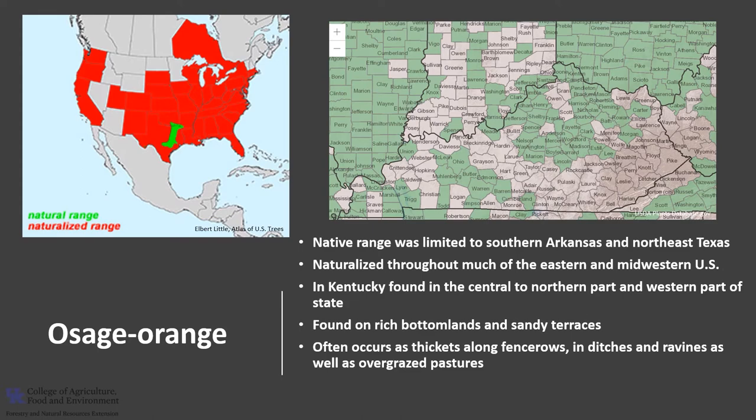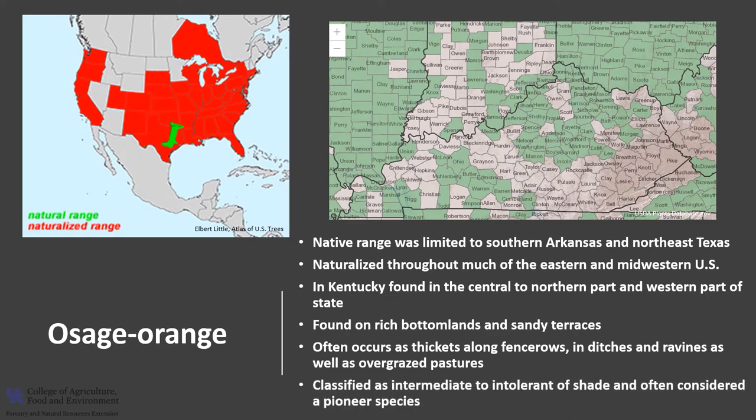In Kentucky we often find it growing with eastern red cedar, black walnut, hickories, elms, and honey locust. It is classified as intermediate to intolerant of shade and is considered a pioneer species on sites.